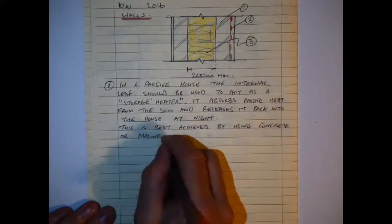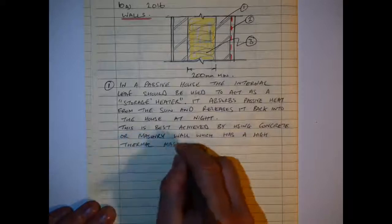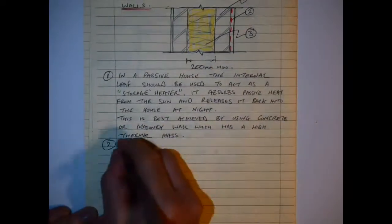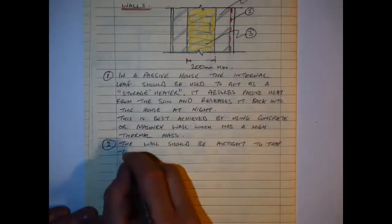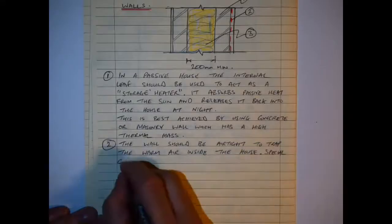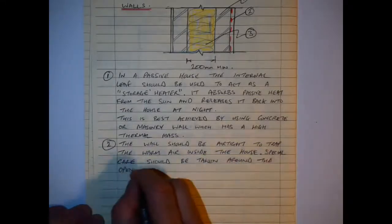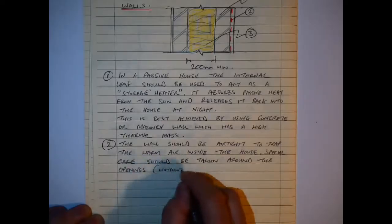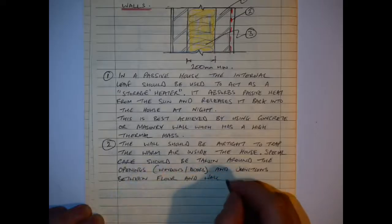The second as indicated in the diagram, the wall should be air tight so it can trap the warm air inside. And special care should be taken around openings, windows, doors, and junctions between floor and wall and ceiling and wall. So it is just highlighting another one of the key features in passive house design is a high level of air tightness.